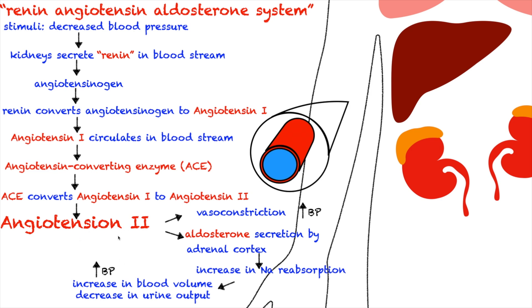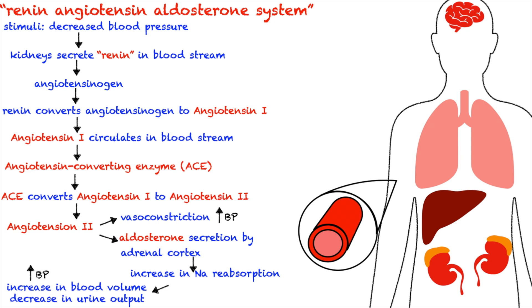Again, angiotensin II causes vasoconstriction, which raises blood pressure, and causes aldosterone secretion, which increases sodium reabsorption. Water follows, leading to an increase in blood volume and a decrease in urinary output, which causes a further increase in blood pressure. Both actions of angiotensin II — vasoconstriction and aldosterone secretion — cause the blood pressure to go up. And that is our renin-angiotensin-aldosterone system.